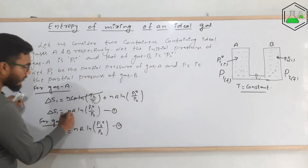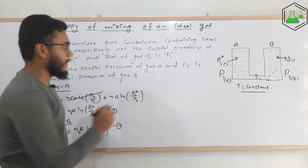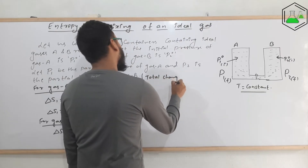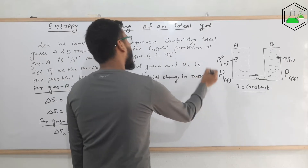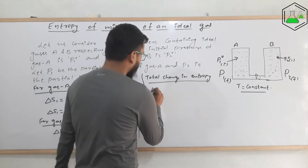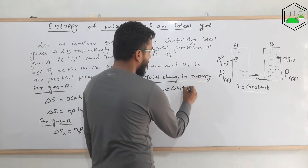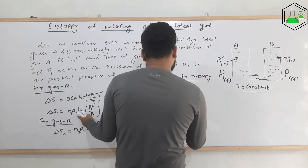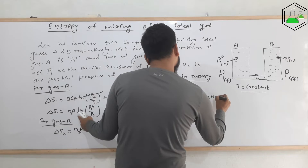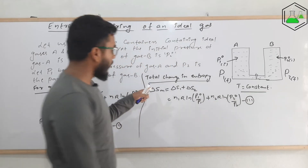Here n₁ is the number of moles of gas A and n₂ is the number of moles of gas B. The total or net entropy change when they are mixed is ΔSₘ (entropy of the mixture) = ΔS₁ + ΔS₂ = n₁·R·ln(p1 naught / p1) + n₂·R·ln(p2 naught / p2). Let us call this equation 3.